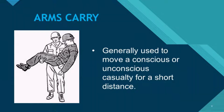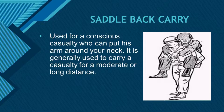The third type is what we call arms carry, generally used to move a conscious or unconscious casualty for a short distance — short because only the arms are used for carrying. The fourth is what we call saddleback carry, which is used for a conscious casualty who can put his arms around your neck. The casualty rides on your back, and it is generally used to carry a casualty for a moderate or long distance.